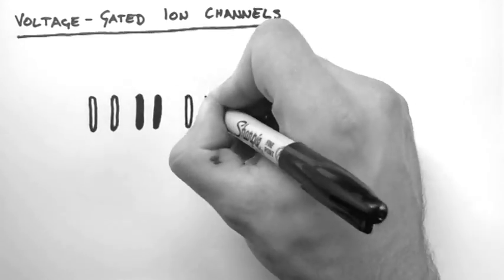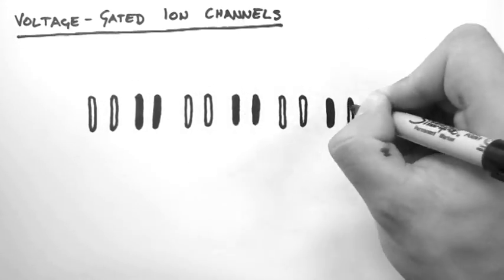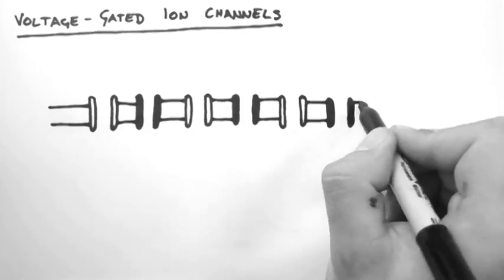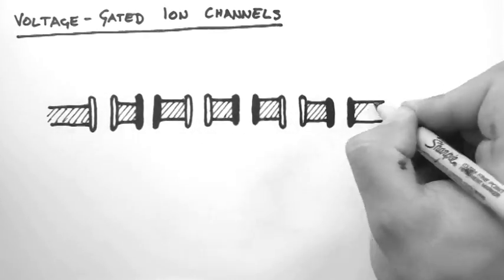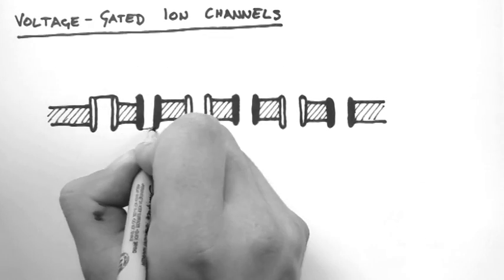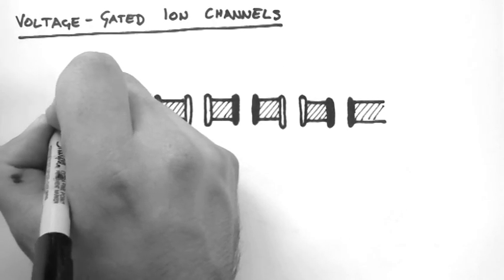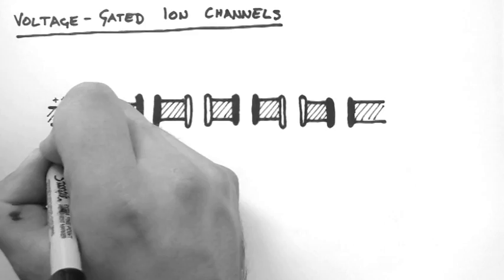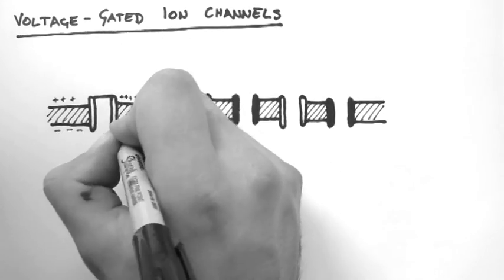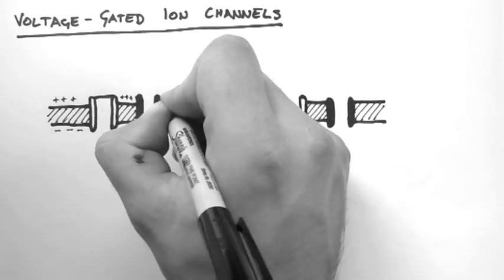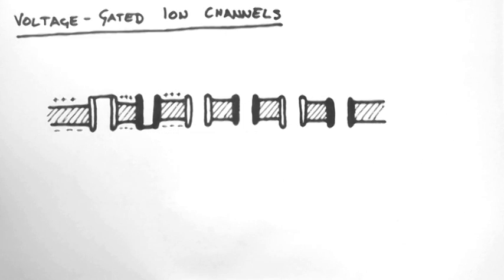Here are the channels. The white channels are the voltage-gated sodium channels and the black are voltage-gated potassium channels. Here are all the charges sitting on each side of the membrane. This membrane is currently at its resting membrane potential, which has been set up by a sodium-potassium ATPase, which is not shown here. See the previous tutorial for an explanation of how the sodium-potassium ATPase sets up this resting membrane potential.